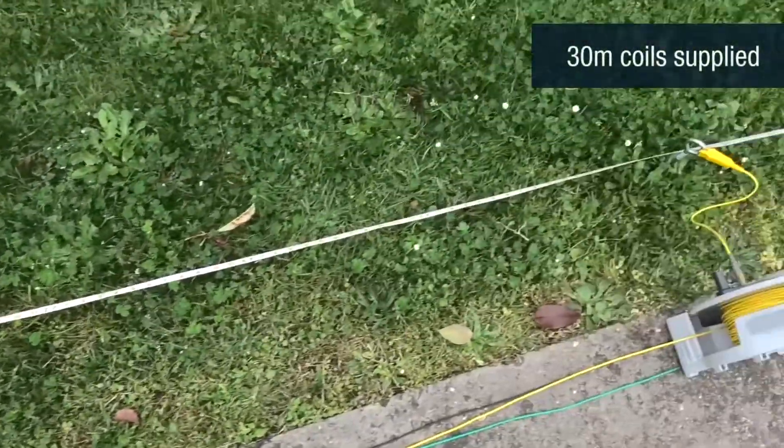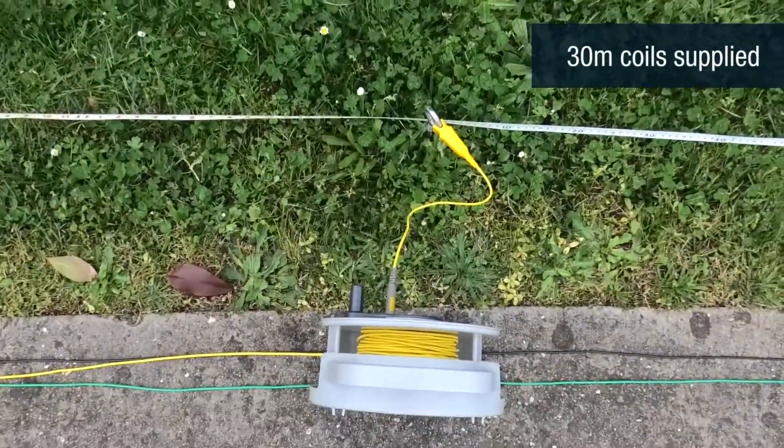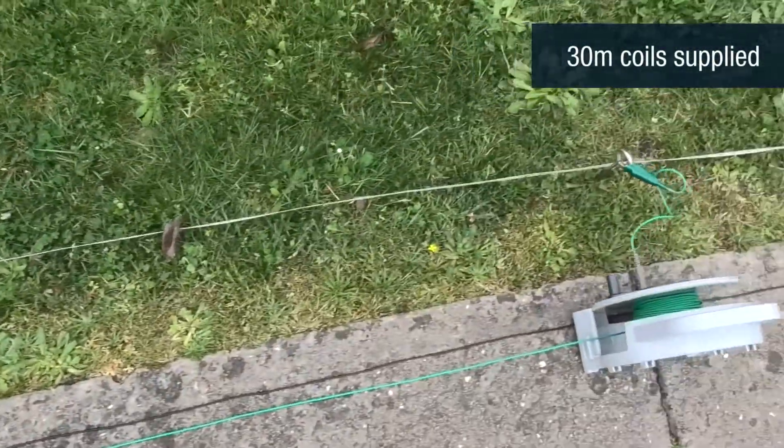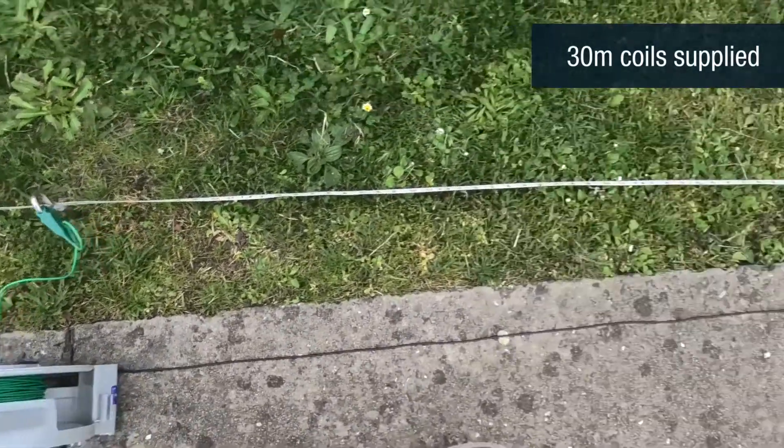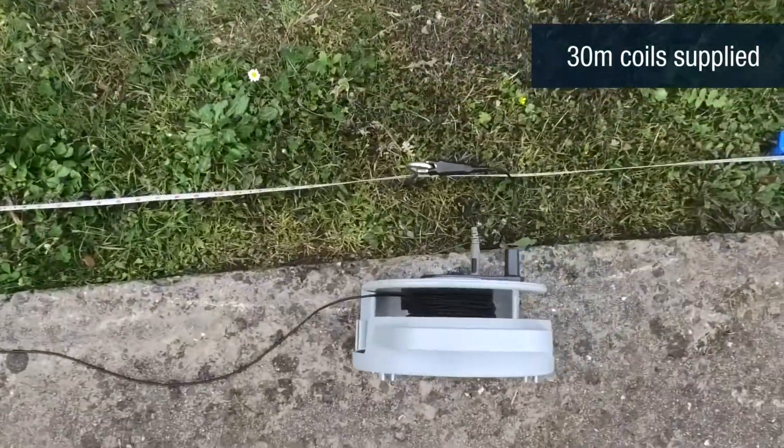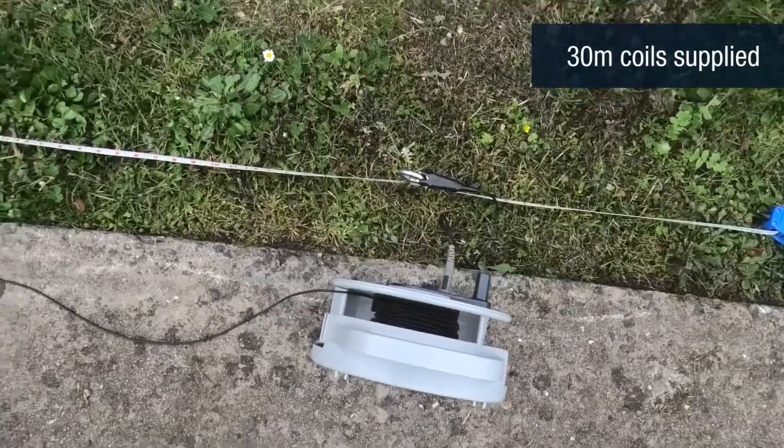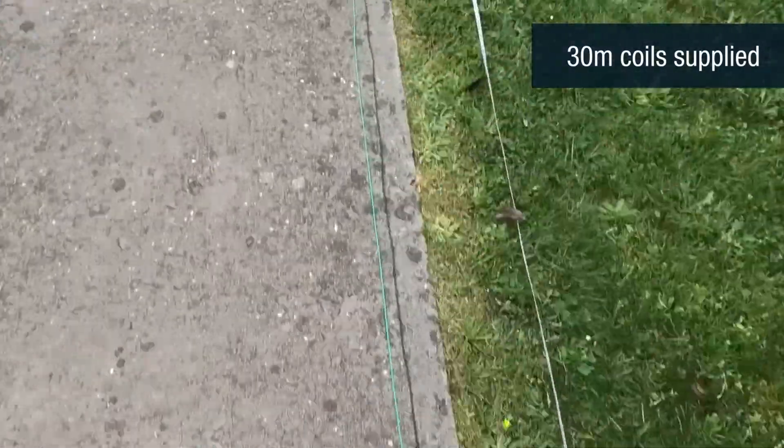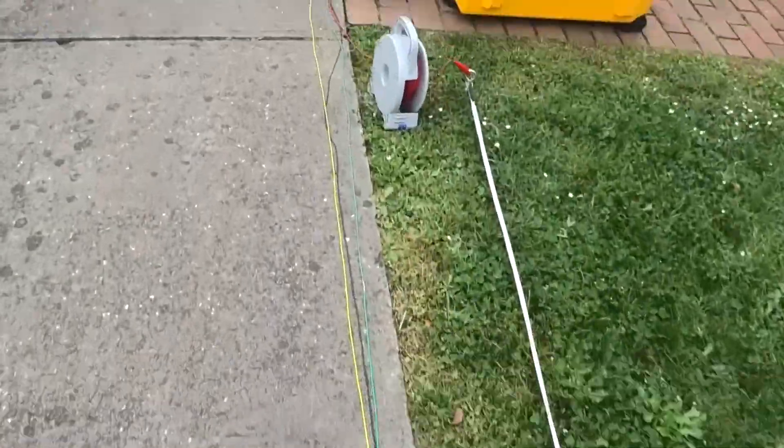Now the distance, the spacing here will usually be specified. This is relatively short spacing. Usually the minimum would probably be 3 metres I believe, but this will be specified. So I've wired all of these up, and now I will power the instrument up.